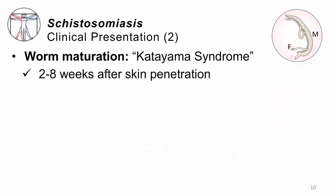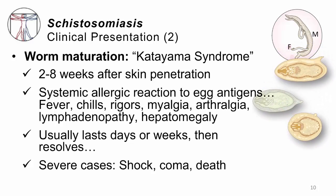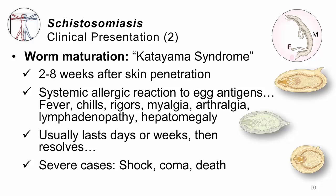Over time, as those parasites develop inside the body in the portal blood, you may see something called Katayama syndrome or Katayama fever. This happens when the male and female have matured into adults, started to mate, and started to lay eggs. We think Katayama syndrome is an allergic-type response to new egg antigens. It presents with fever and chills, rigors (shakes), myalgia (muscle pain), arthralgia (joint pain), lymphadenopathy (swollen lymph nodes), and hepatomegaly (a big liver). This is a systemic inflammatory response that lasts for days or weeks and then usually goes away by itself as the allergic response to those egg antigens calms down.